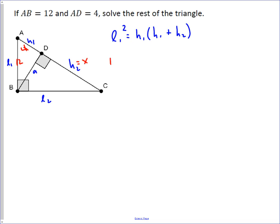And so we're going to have 12 squared equals 4 times 4 plus X. And then we just solve this, so we get 144 equals 16 plus 4X, subtract 16, and we get 128 equals 4X, so X equals 32. And so that means DC is 32.